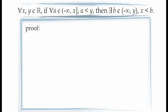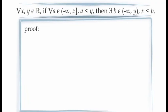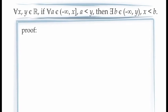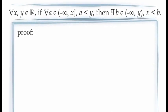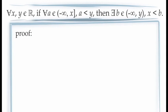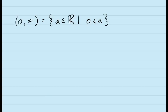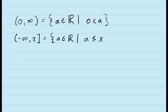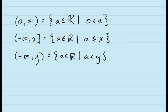In this example, we're going to prove: for all values of x and y in the real numbers, if for all values of a in the closed interval from negative infinity to x, a is less than y, then there is at least one value of b in the open interval from negative infinity to y for which x is less than b. Note that the closed interval from negative infinity to x denotes the set of real numbers less than or equal to x, and the open interval from negative infinity to y represents the set of real numbers strictly less than y.